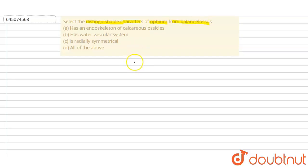Option A has an endoskeleton of calcareous ossicles. Option B has water vascular system. Option C is radially symmetrical, and option D all of the above.